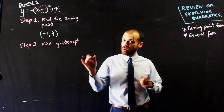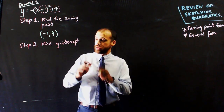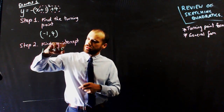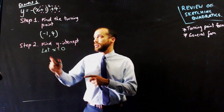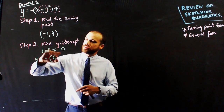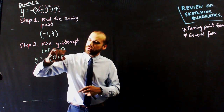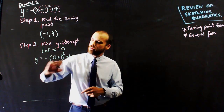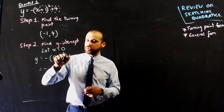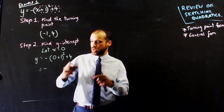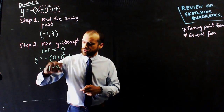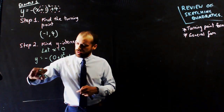Step 2 is to find the y-intercept. To find a y-intercept, you always let x equal 0. So we get y equals negative 0 plus 1 squared plus 4. That's negative 1 squared, and 1 squared is 1, so it's negative 1 plus 4, which gives us 3. The y-intercept is equal to 3.